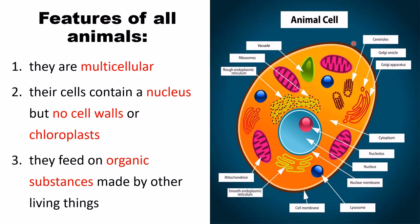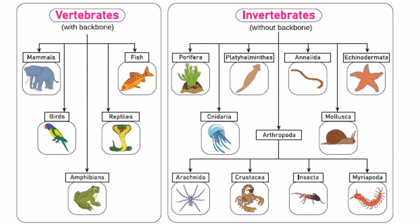If you look at this cell, you can see that animals are multicellular organisms. When you think about an animal cell, always remember they are multicellular, their cell contains a nucleus — you can see that prominent nucleus here — they don't have a cell wall, they don't have chloroplast, and they feed on organic substances made by other living things.